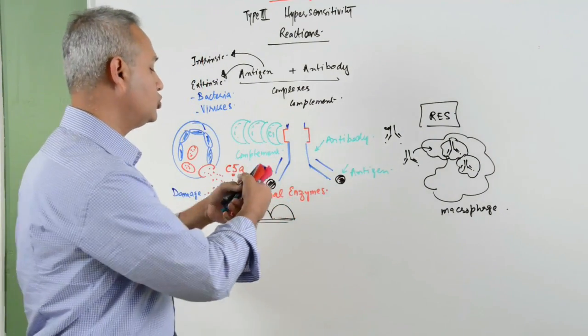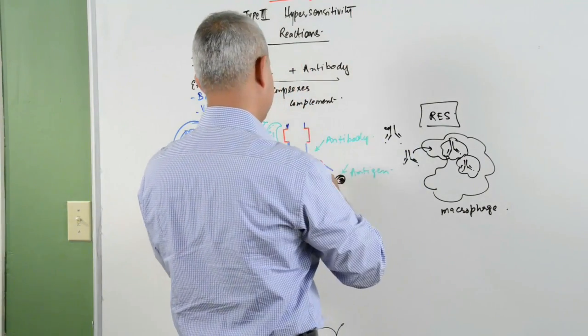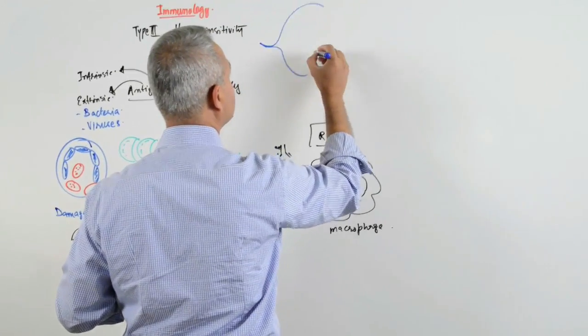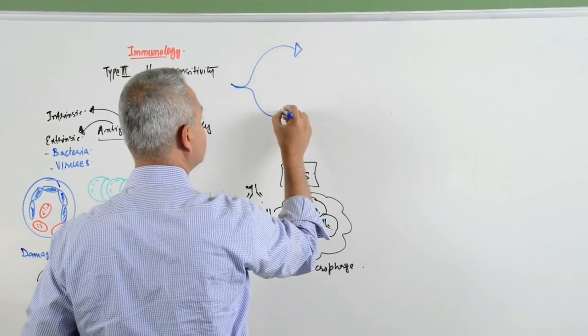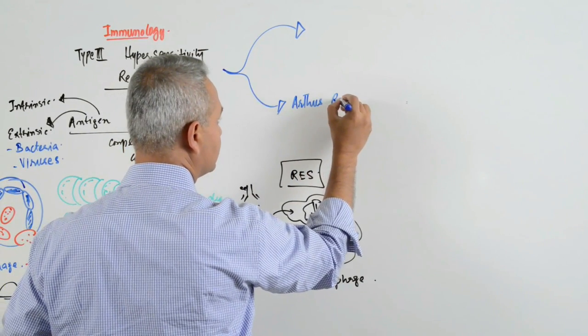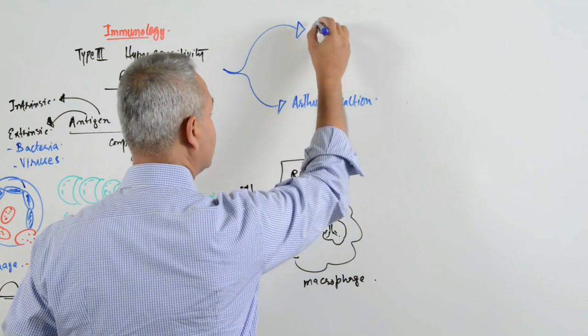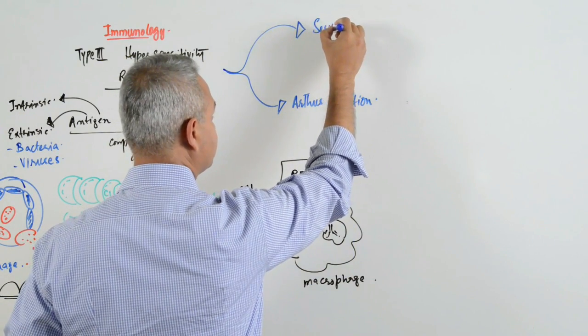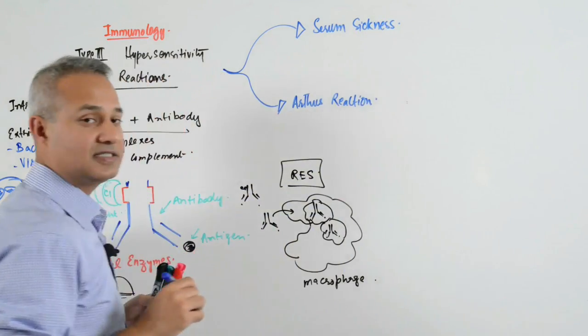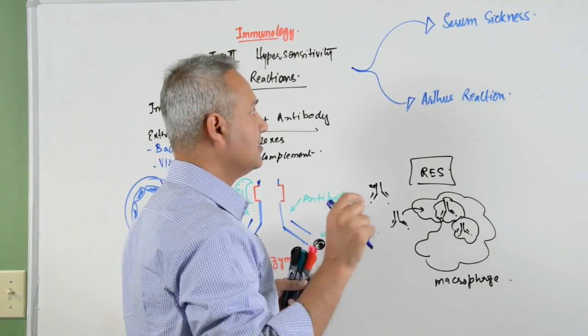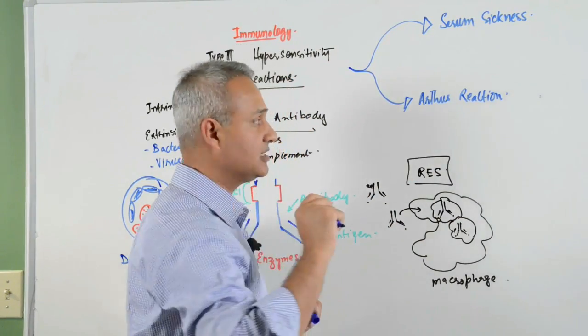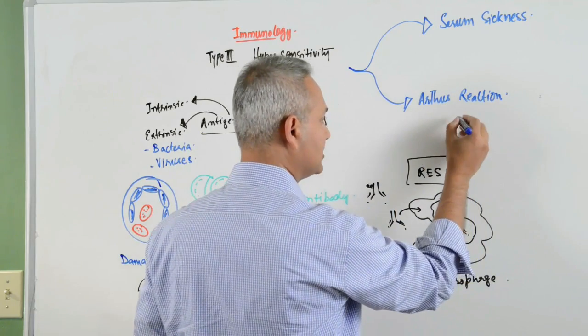Now let us see two major types of type 3 hypersensitivity reaction. One type is Arthus reaction and the other is serum sickness. Arthus reaction is named after Dr. Arthus who discovered this anomaly. Pay attention to this one - these are all USMLE concepts.